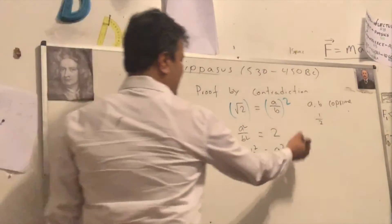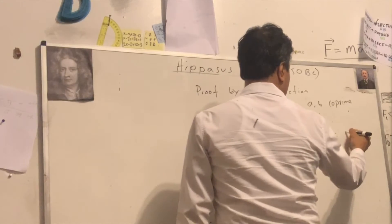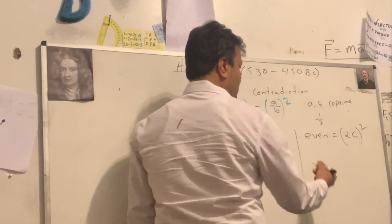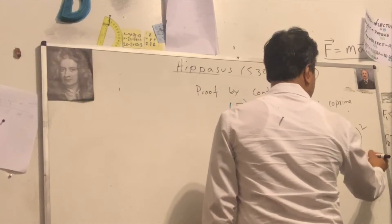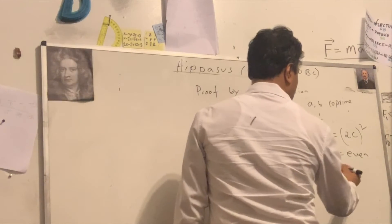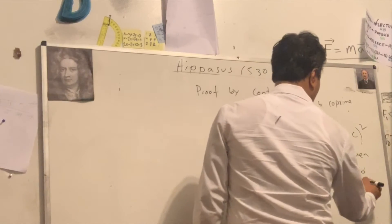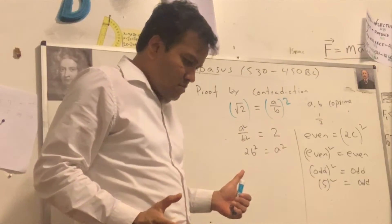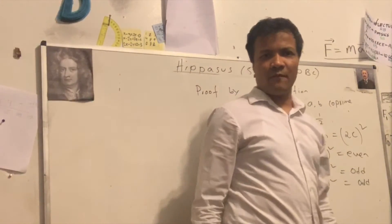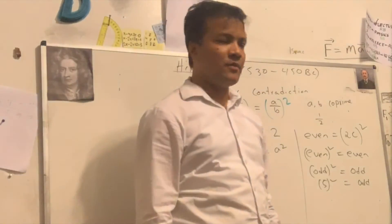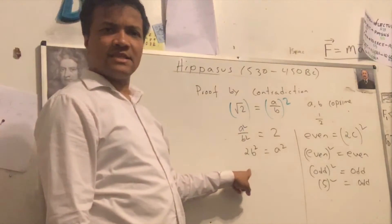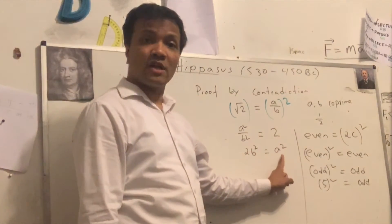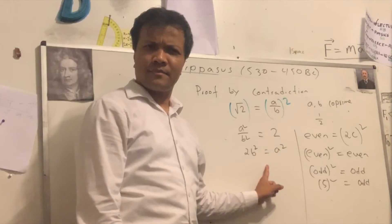A long time ago we said an even number equals 2C. Even squared is even, and odd squared is odd — for example, 5 squared is 25, which is odd. Now, 2B squared is even, and since A squared equals 2B squared, A squared is also even. And if A squared is even, then A must be even.